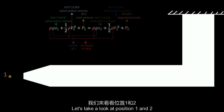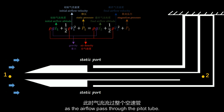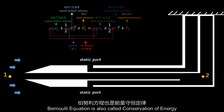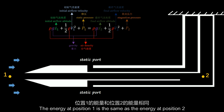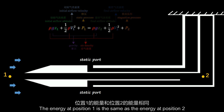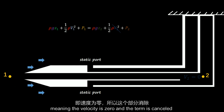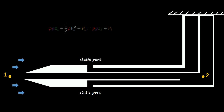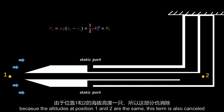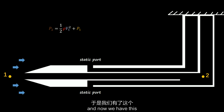Let's take a look at positions 1 and 2 as the airflow passes through the pitot tube. The Bernoulli equation is also called conservation of energy. The energy at position 1 is the same as the energy at position 2. When the airflow reaches position 2, it stops — meaning the velocity is 0 and that term is cancelled. Let's rearrange the formula. Because the altitude at positions 1 and 2 are the same, that term is also cancelled.